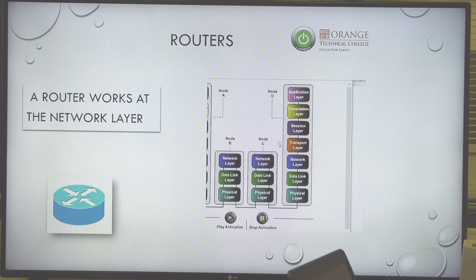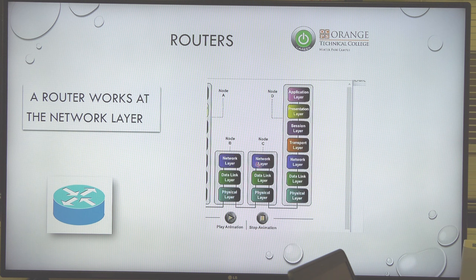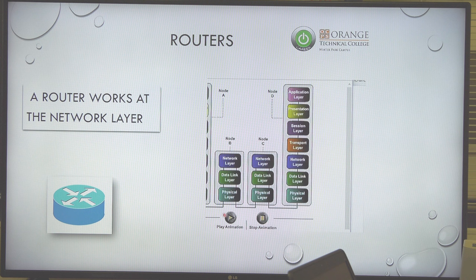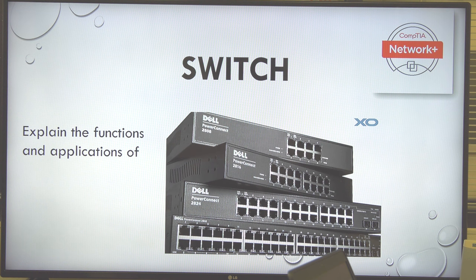Looking at the animation, this is the router. Notice it basically works at Layer 3, but it also has a data link layer and a physical layer. To leave the router, you need a data link layer and a physical layer. So routers in reality have all three layers, but for CompTIA exam questions it's going to be Layer 3.